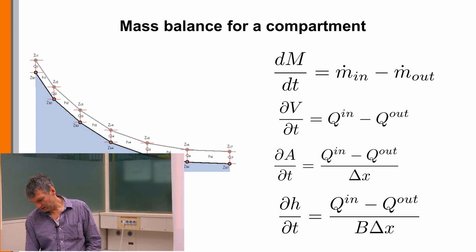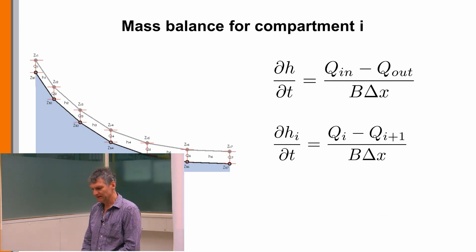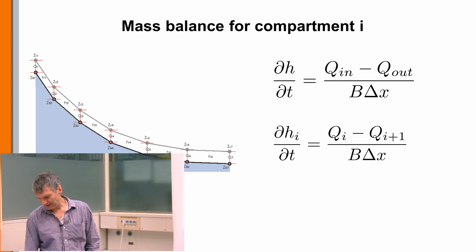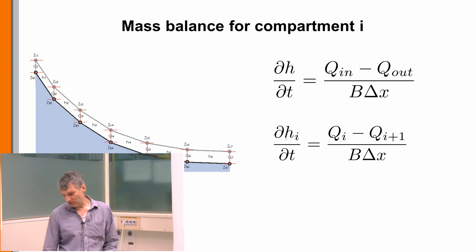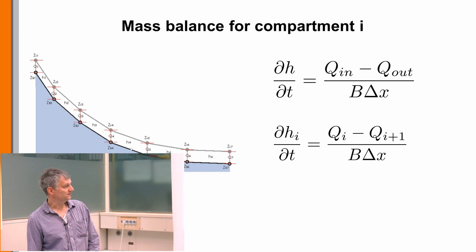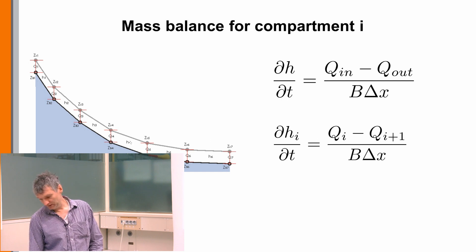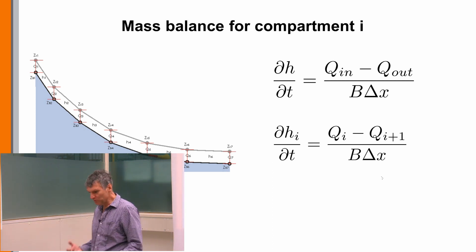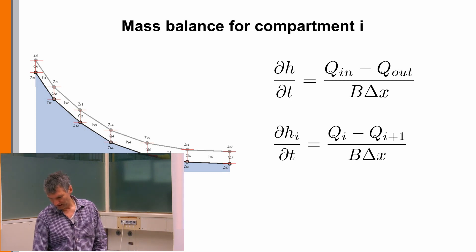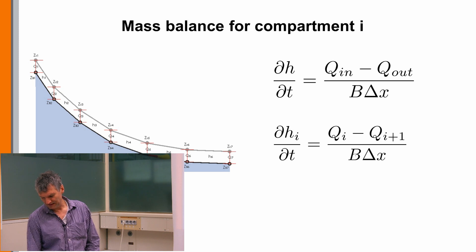This physics applies to one compartment and now we need to discretize it. We write the equation for compartment i: the water height change in compartment i is driven by the flux coming in at boundary i minus what goes out at boundary i+1. If the width varies from compartment to compartment, the width also carries an index i.